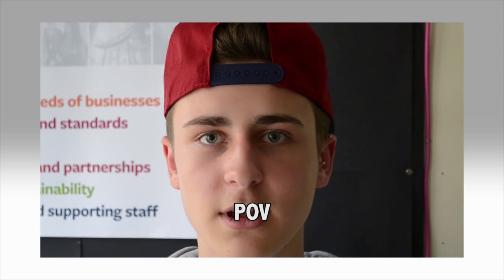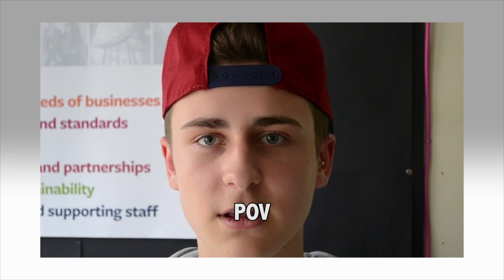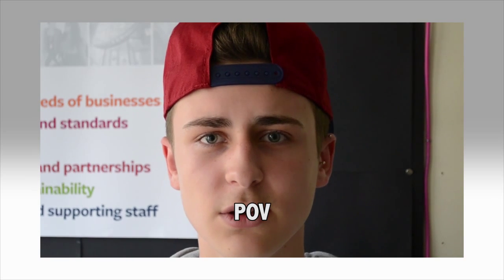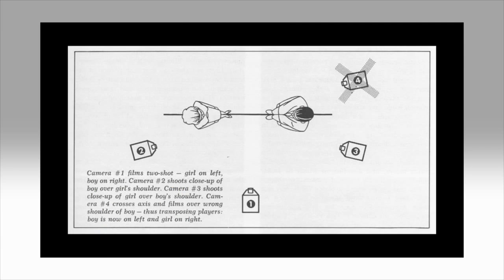And finally we've got the POV shots. One of the things that you want to avoid when filming conversations is crossing the line of action when you're filming. If you cross over the line of action and place your camera here in position four, then this will happen in the edit.